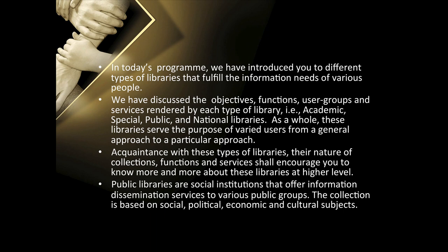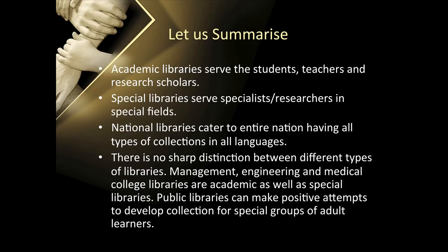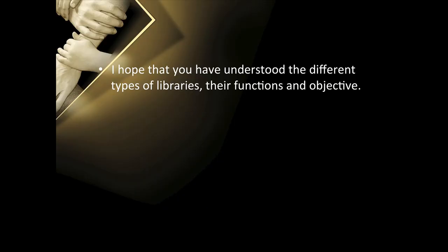Public libraries are social institutions that offer information dissemination services to various public groups; their collection is based on social, political, economic and cultural subjects. Academic libraries serve students, teachers and research scholars. Special libraries serve specialists and researchers in special fields. National libraries cater to the entire nation having all types of collection in all languages. There is no sharp distinction between types of libraries — whether management, engineering, medical or college libraries, they are academic as well as special libraries. Public libraries can make a more positive attempt to develop collection for special groups of adult learners. I hope you have understood the different types of libraries, their functions and objectives. Thank you.